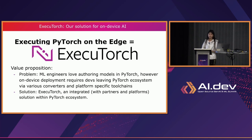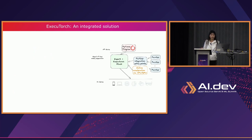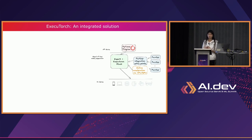Now we know the problem: ML engineers love authoring models in PyTorch, but on-device deployment requires leaving the PyTorch ecosystem via various converters and platform-specific tool chains. Our solution is ExecuTorch — integrated with partners and platforms within the PyTorch ecosystem. By providing a set of integration points, we want vendors and OEMs that provide on-device ML acceleration and tool chains to become partners and be part of the PyTorch ecosystem.